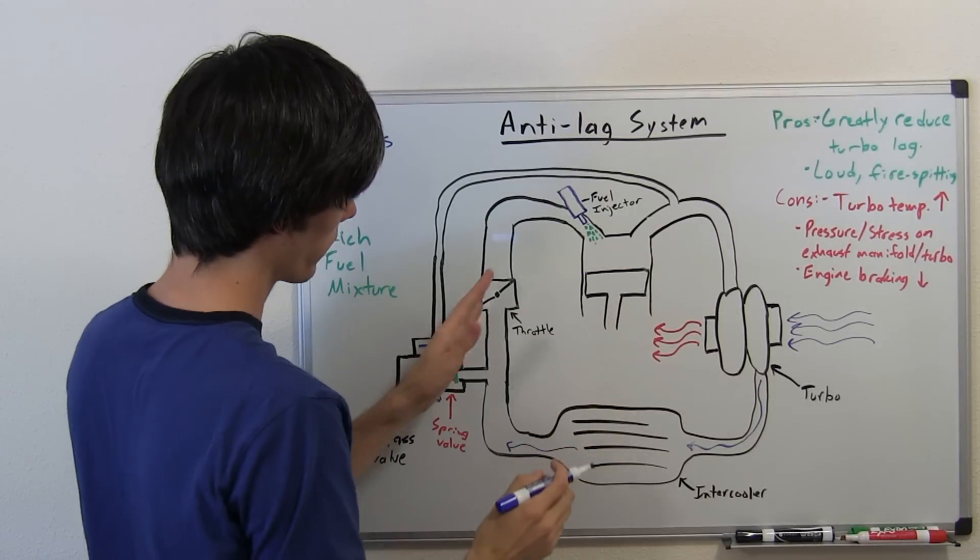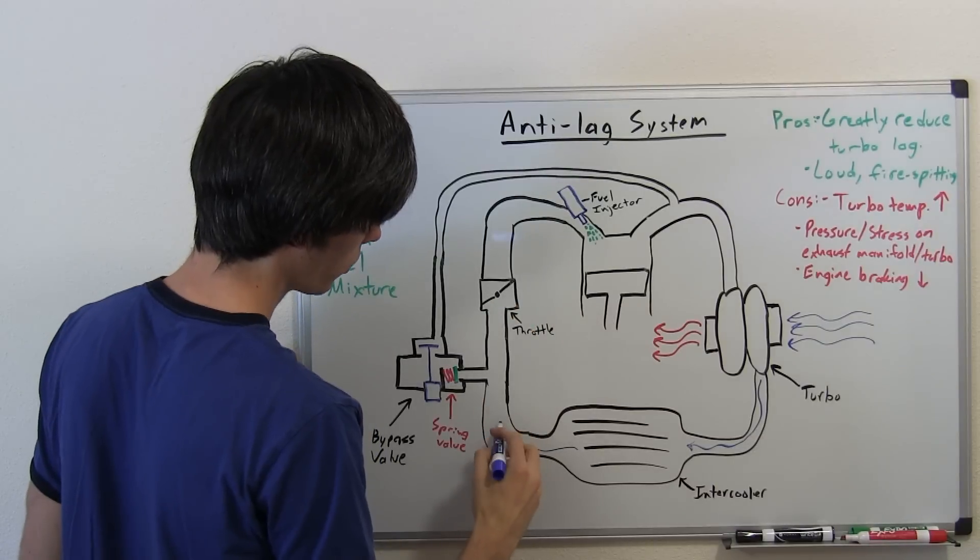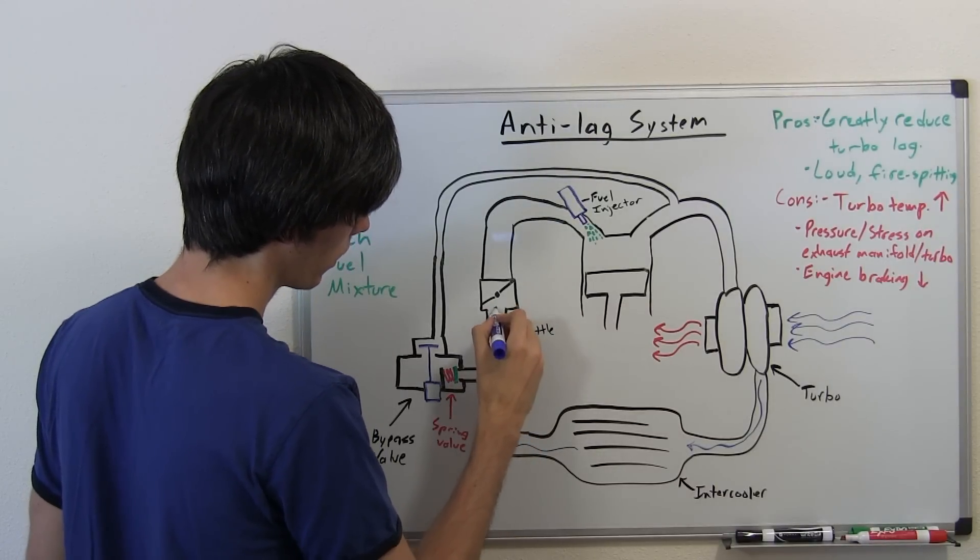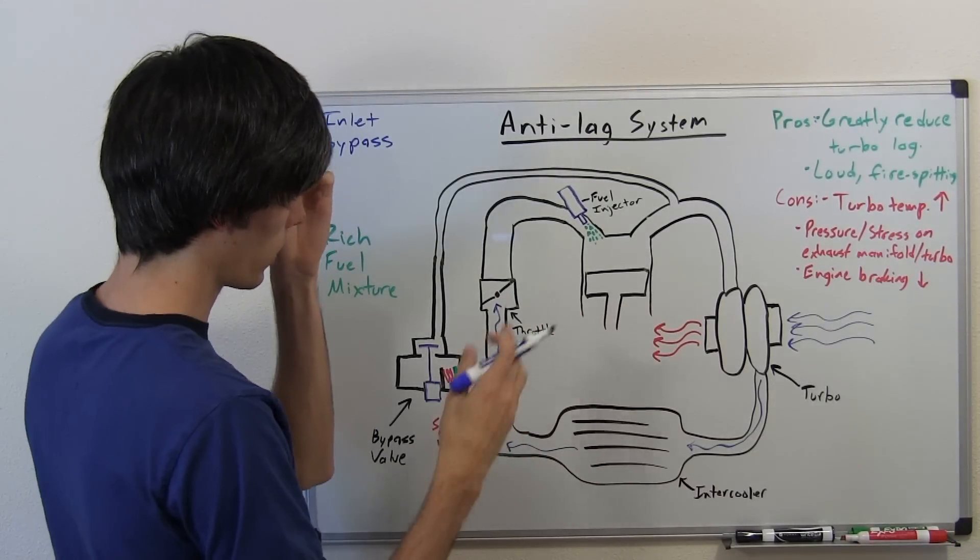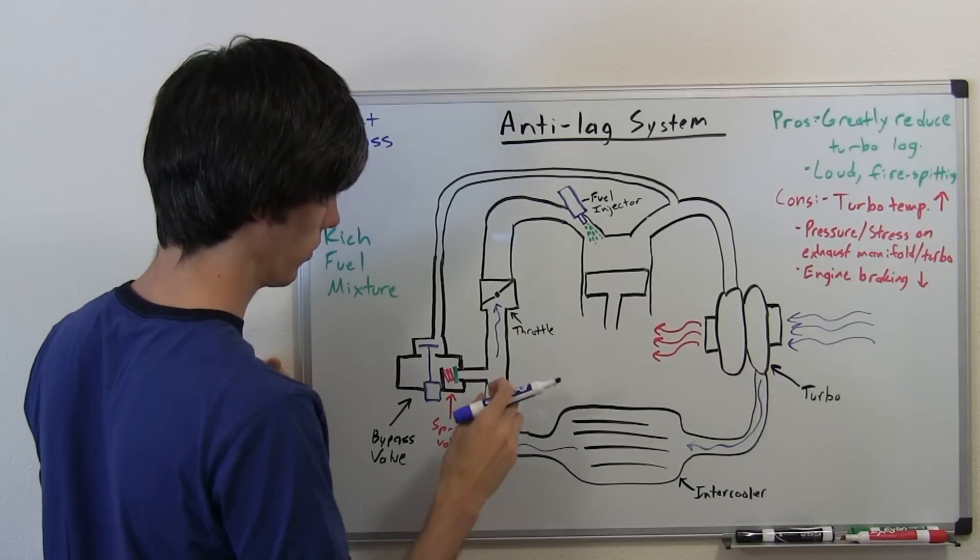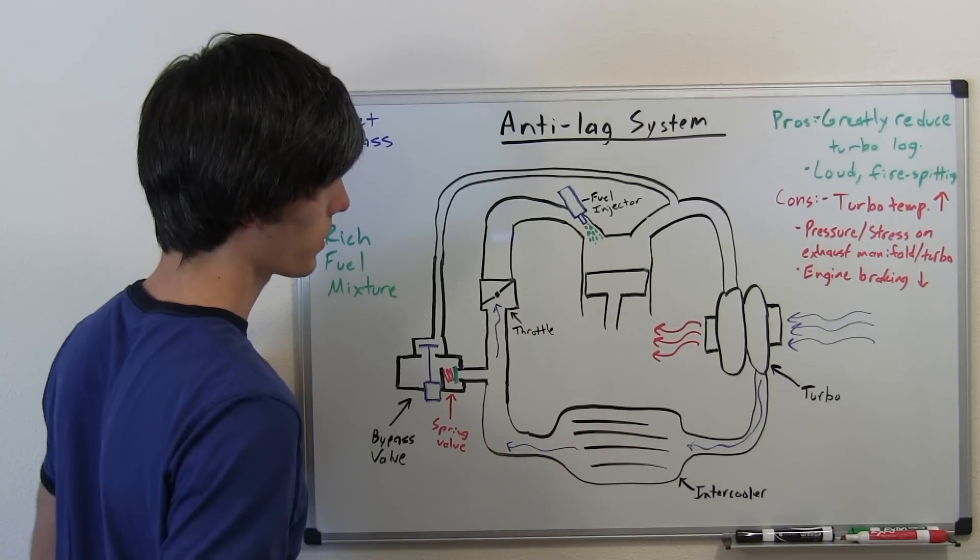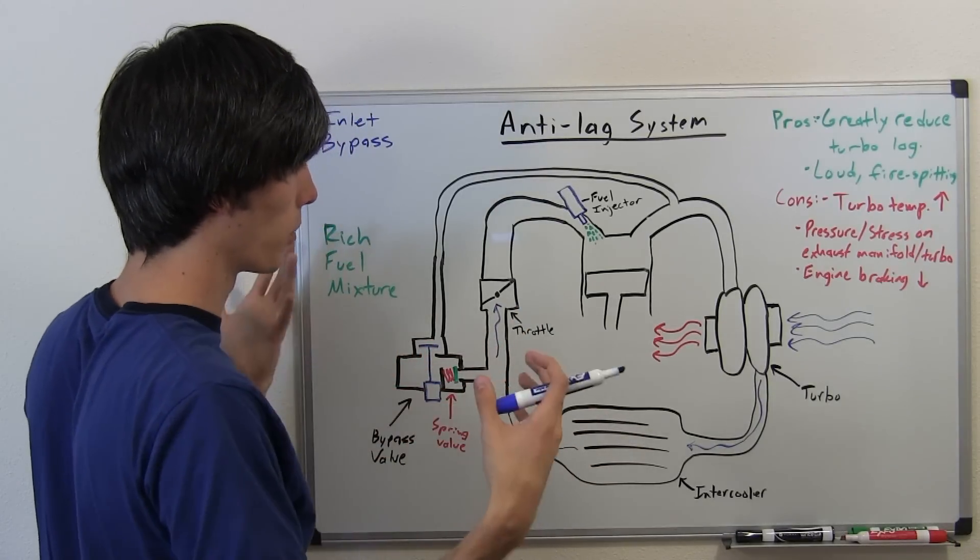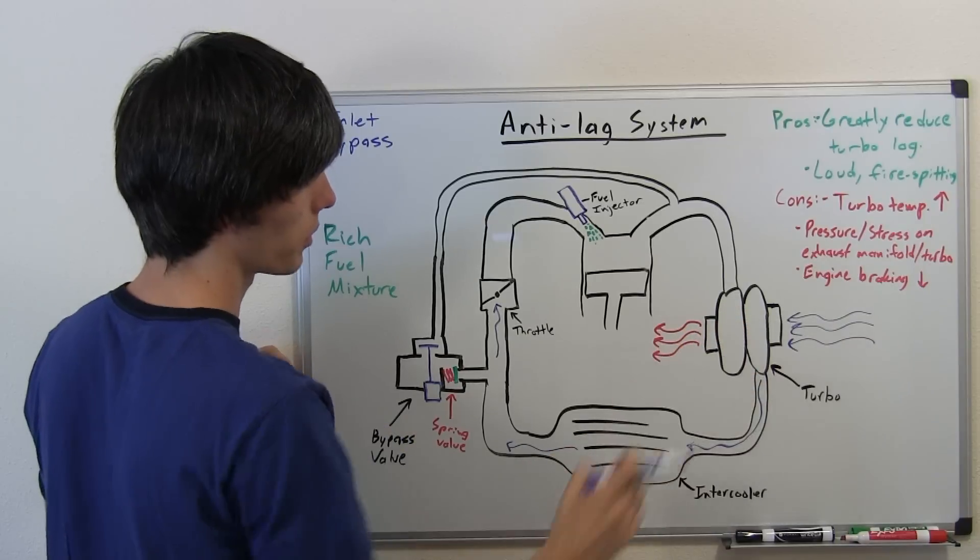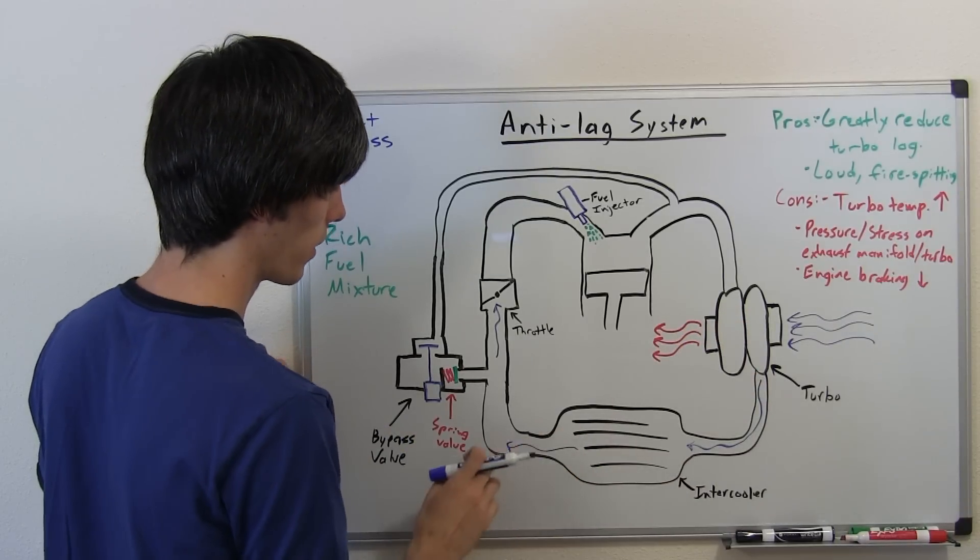When you let off the gas, that throttle closes. You've got all this air that was going right through your throttle, but now the throttle's closed. You've got that buildup of pressure because you were at a high RPM. You're producing a ton of exhaust, so that was spooling up your turbo, and you had a good amount of boost.